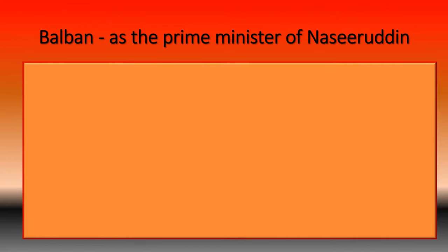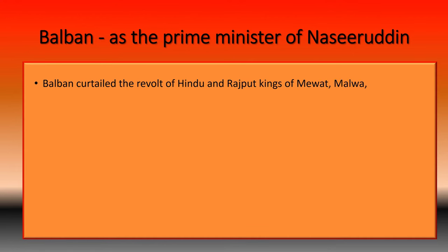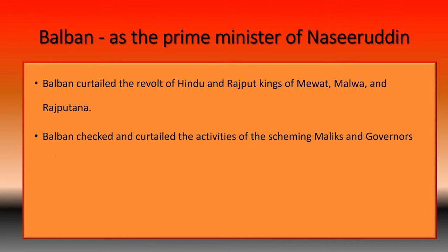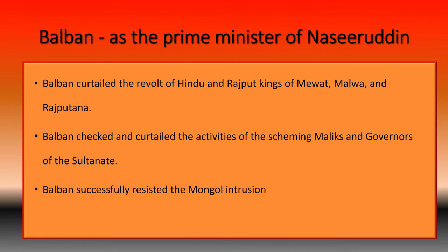As Prime Minister, Balban curtailed the revolt of Hindu and Rajput kings of Mevat, Malwa, and Rajputana. He checked and curtailed the activities of scheming maliks and governors of the Sultanate. He also successfully resisted Mongol intrusion into the territory of the Delhi Sultanate.